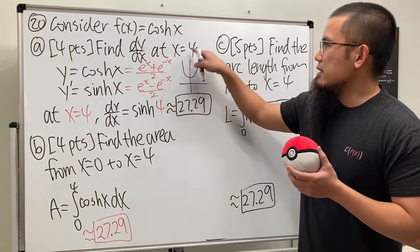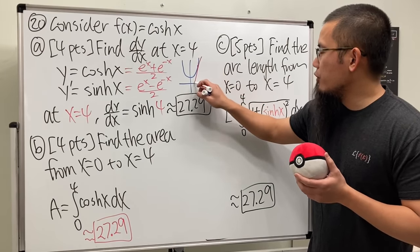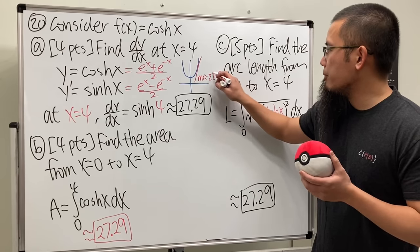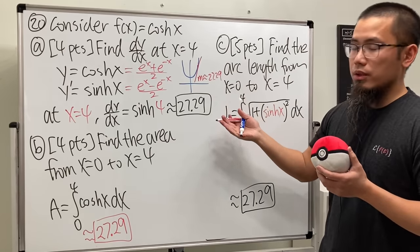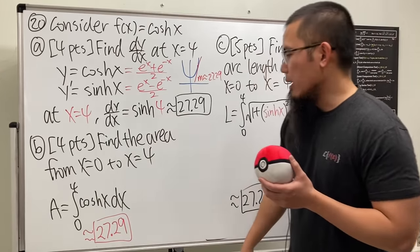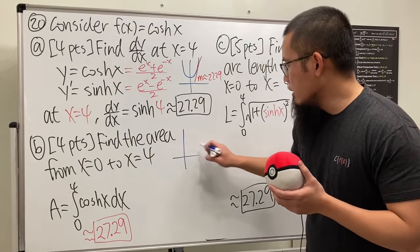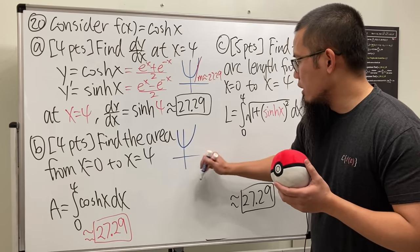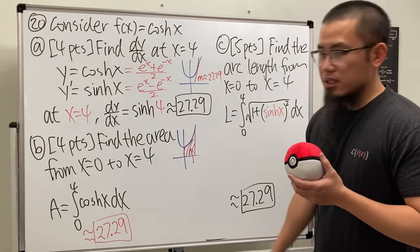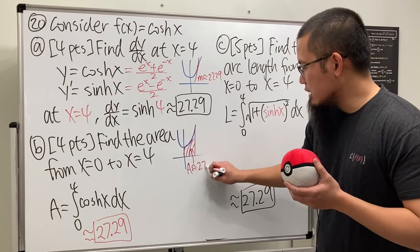dy/dx at x equal to 4—the slope of the tangent line is approximately 27.29. Really, really cool, right? The slope of the tangent line is 27.29. And if you want to talk about the area, of course it's that. The area from 0 to 4, it will look like from here to here, and the area is approximately 27.29.